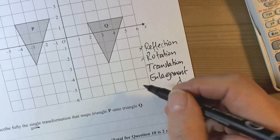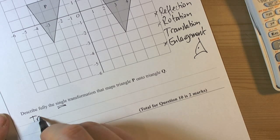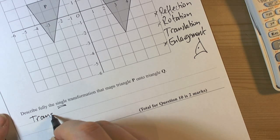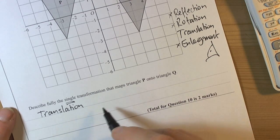So it's got to be a translation. So we know that the word we're going to use here for describing the single transformation is translation. And then we've got to remember that with a translation we need a vector.